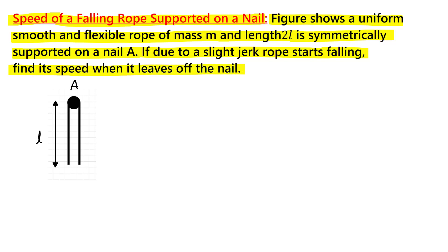So we have a nail. On this nail, this side we have rope and this side we have rope. The total length of rope is 2L, which means this side length is L and the other side length is also L. The mass of this rope is M.